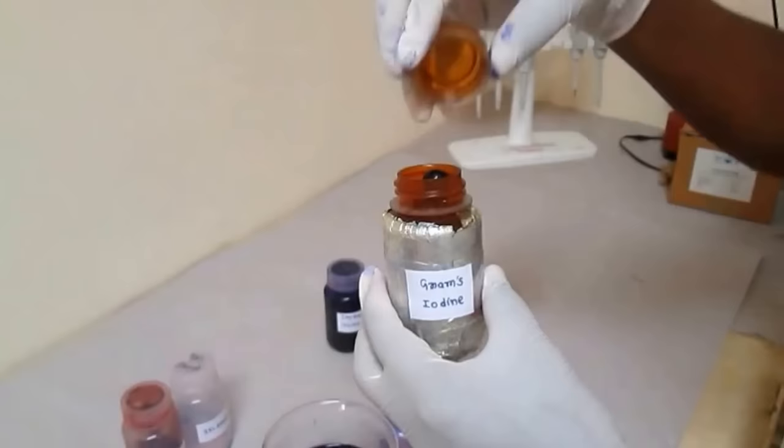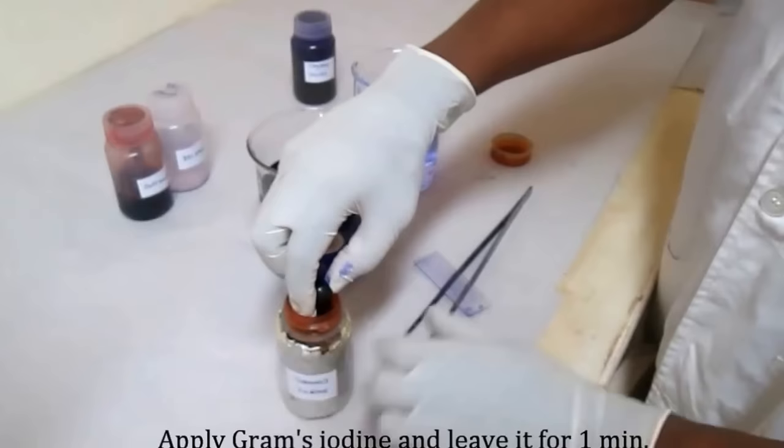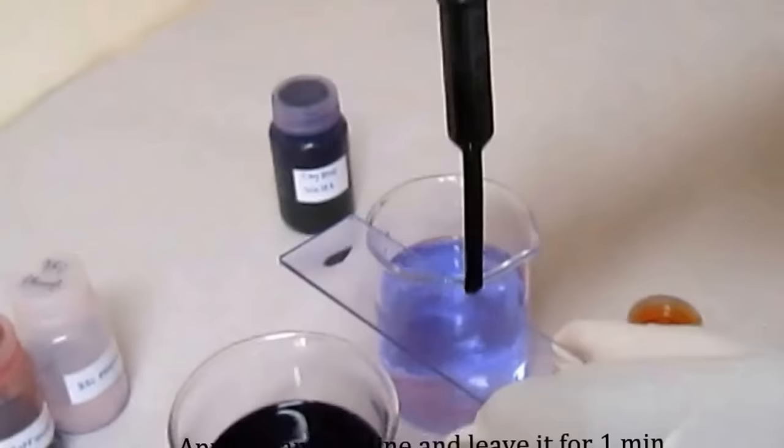Gram iodine acts as a mordant. It reacts with crystal violet to form a complex. Apply this gram iodine on the smear and leave it for 1 minute.